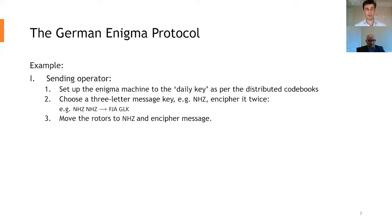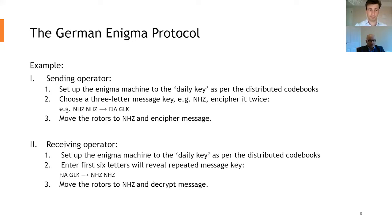The operator would then move the rotors to N, H, Z, and then start typing the actual message to the rest of the message. So this is just a six-letter header. Now the receiving operator essentially does this in reverse, sets it up for the daily key, enters the first six letters that he receives, he or she receives, which would be F, J, A, G, L, K. And then if done correctly, what will come out will be N, H, Z, N, H, Z.